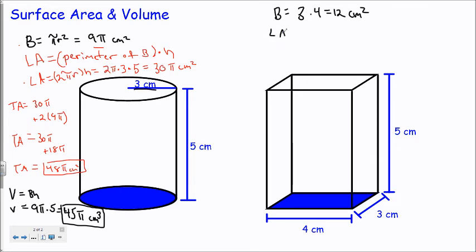I'll again calculate my lateral area, which will be the perimeter of my base shape, which would be 4 plus 3, which is 7, plus another 4, which is 11, plus another 3, which is 14. So I'll get 14, the perimeter of my base, times 5, the height of my prism, which will give me 70 centimeters squared.